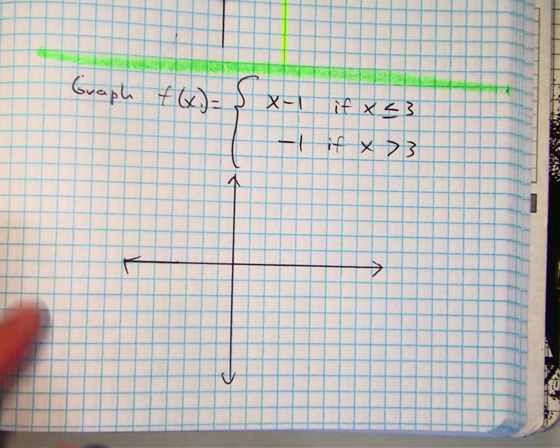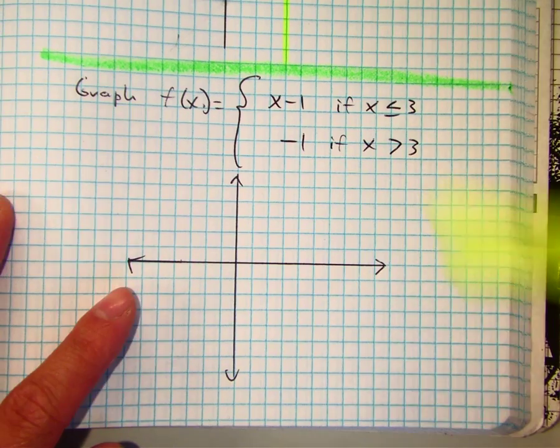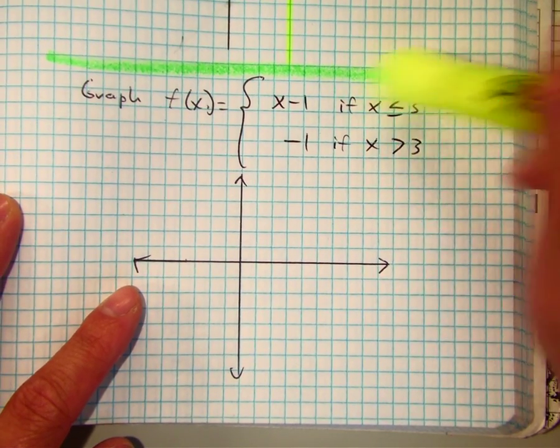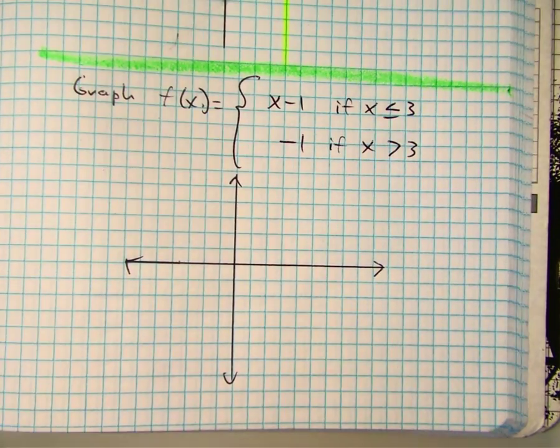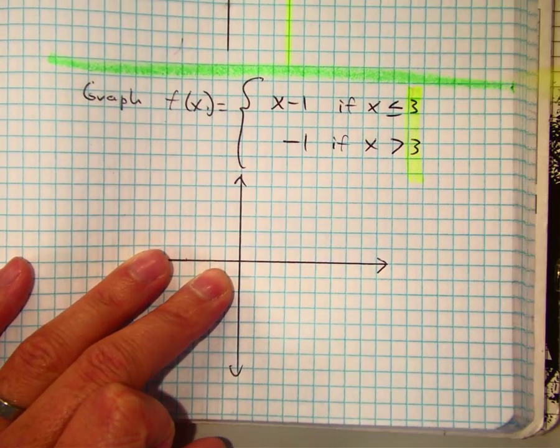Alright, let's go ahead and graph this. So I noticed that over here, my restricted domain tells me at 3. So let me go ahead and draw that line at 3.